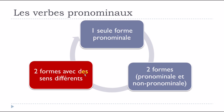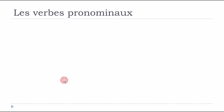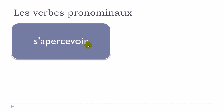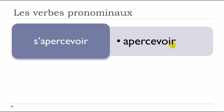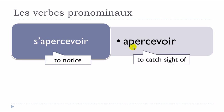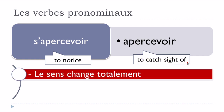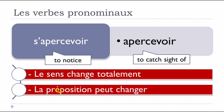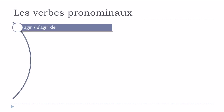Now, some verbs have two forms that look alike but whose meanings are really quite different. For example, s'apercevoir and apercevoir. S'apercevoir means 'to notice' and apercevoir means 'to catch sight of' - le sens change totalement. The preposition may also change depending on whether you use the pronominal or non-pronominal form.